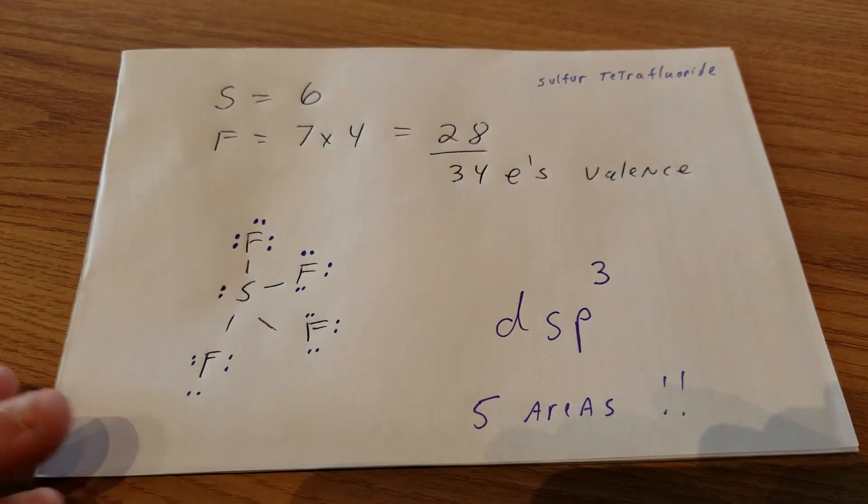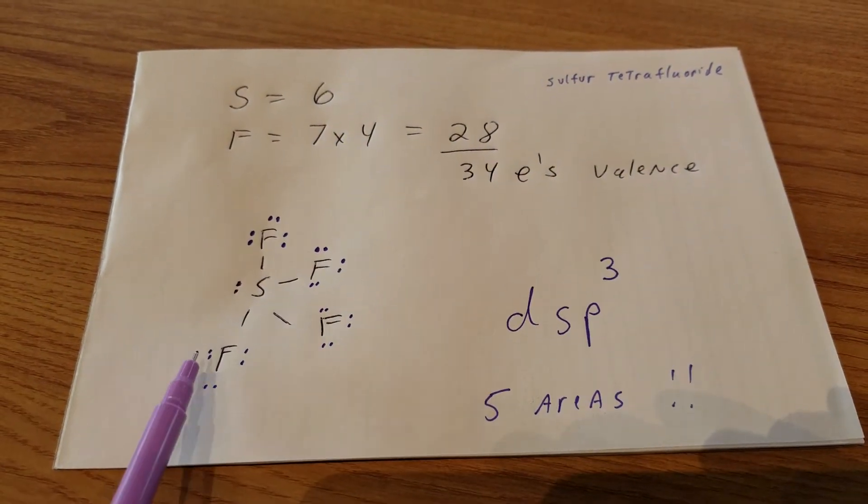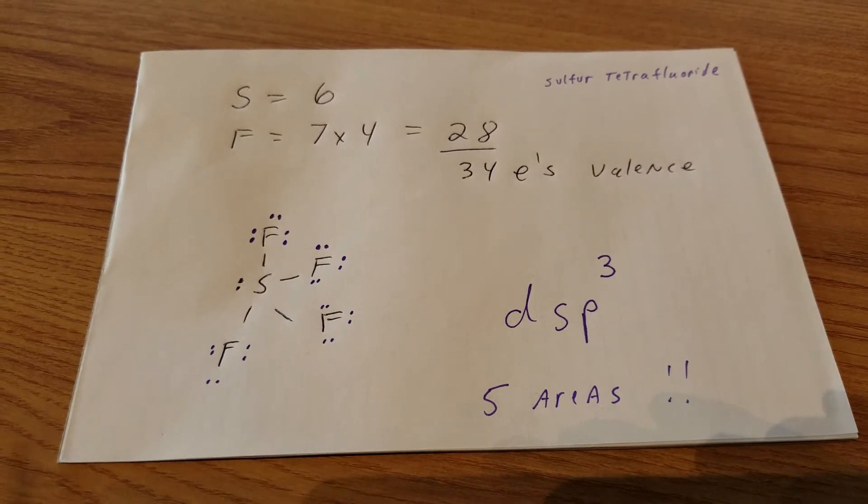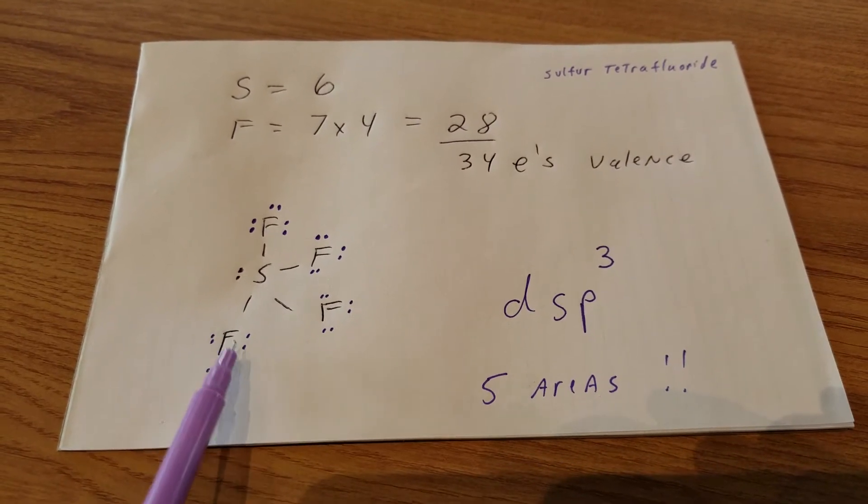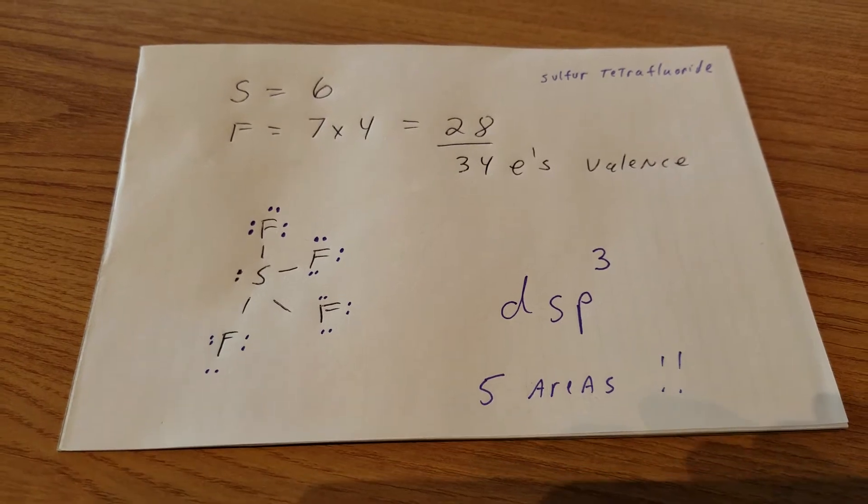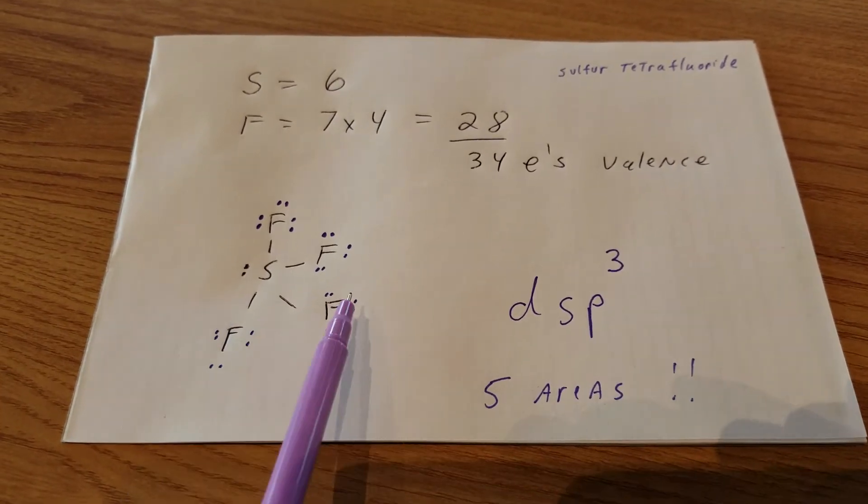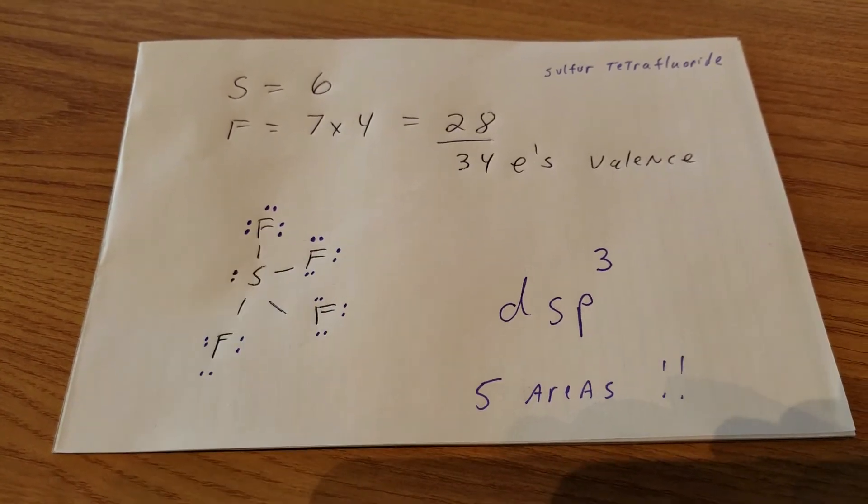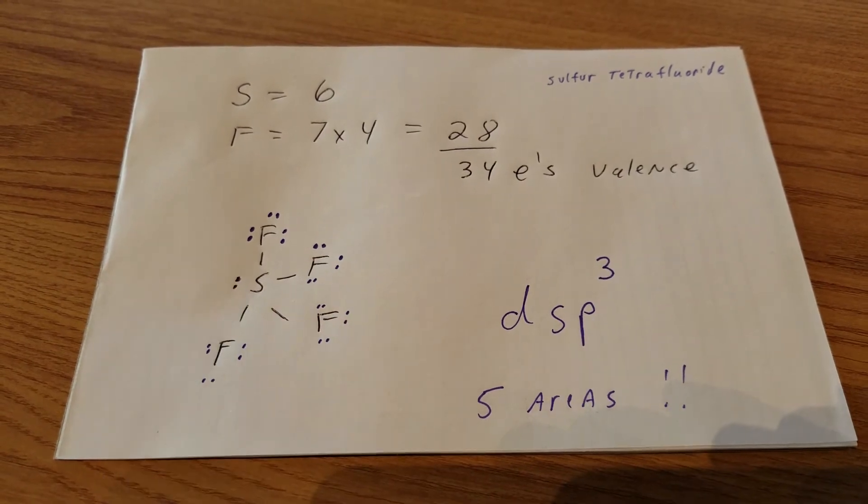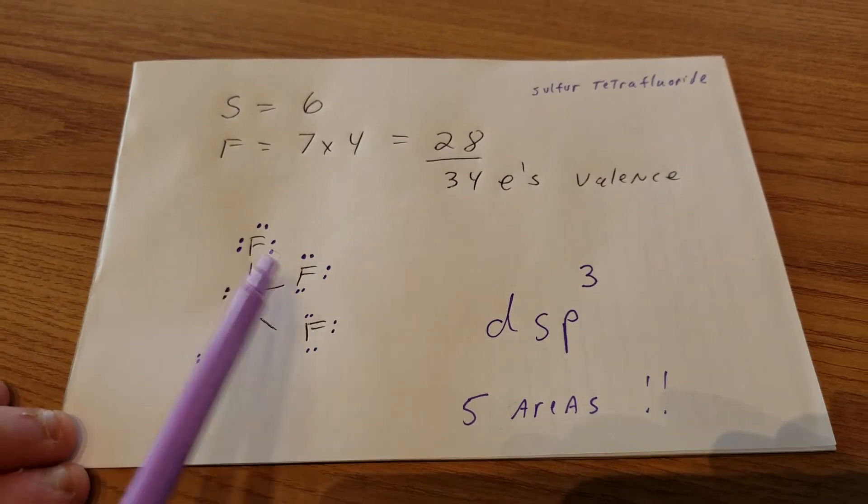I put the sulfur in the middle, all the fluorines go to the outside, and then each outside atom gets 8. So we have 2, 4, 6, and the single bond here counts as 2 more to make 8. So we have 8, 16, 24, 32, and anything left over goes to the central atom.